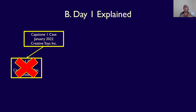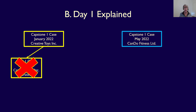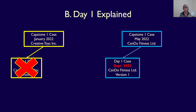Let's do a new scenario. Say you took the Capstone One module in January 2022 and failed Day One when you wrote the May 2022 CFE. Can you write the Day One case in September 2022 instead? The answer is a hard no. The September CFE is based on a totally different Capstone One case — the one done in May 2022, which was called Can Do Fitness Limited. There is no roll forward of the Creative Toys Inc. case in the September 2022 CFE.